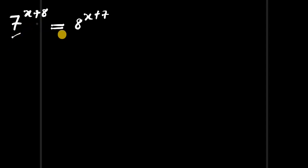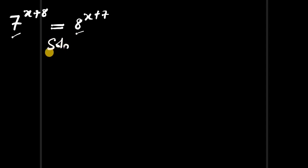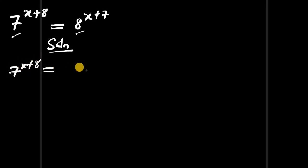We have the equation 7 to the power of x plus 8 equals 8 to the power of x plus 7. How do we solve for the value of x? We have a solution.